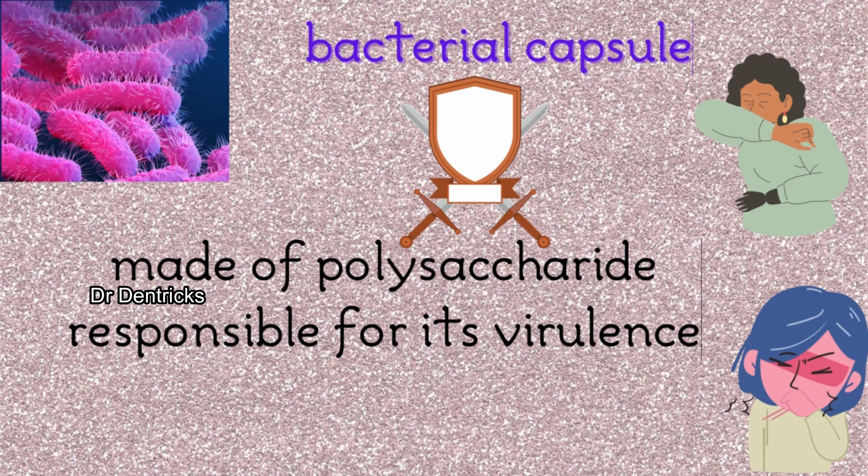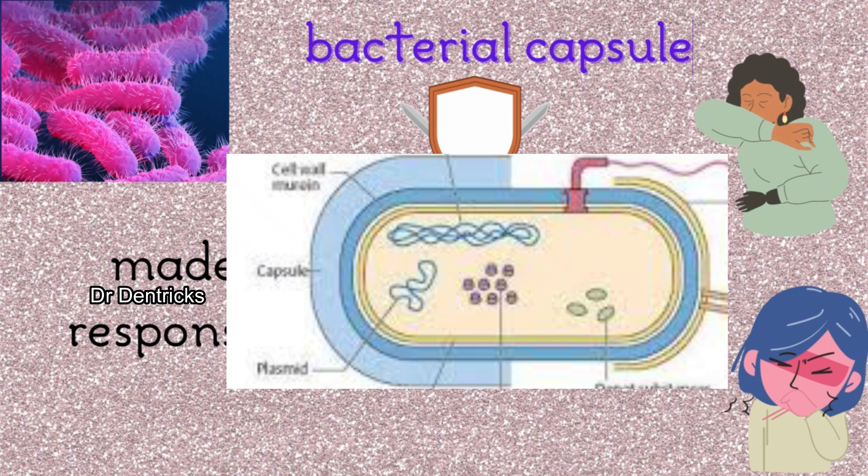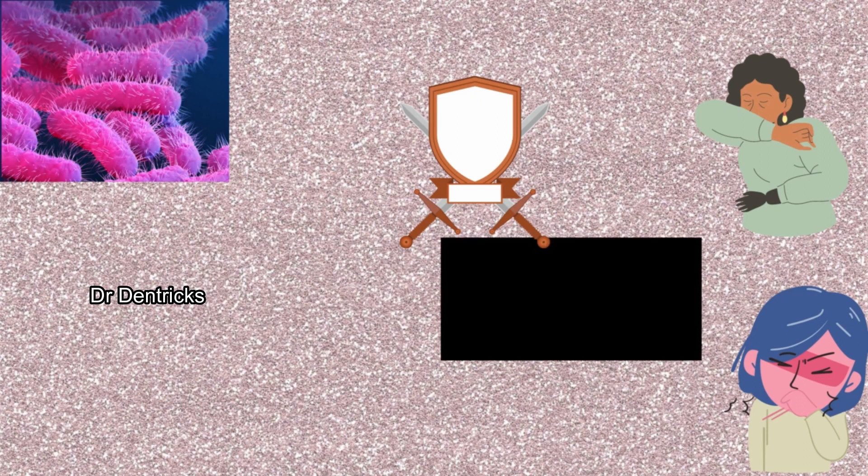Before getting into a detailed explanation about this reaction, we should know about the important bacterial appendage — the capsule. It is entirely made up of polysaccharide units and is responsible for the virulence of the bacteria. This is the main appendage that protects the bacteria from powerful antibiotics. Staining this capsule can also be helpful in identifying the bacteria.